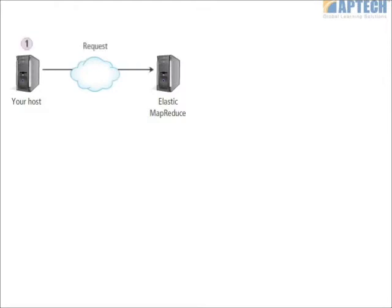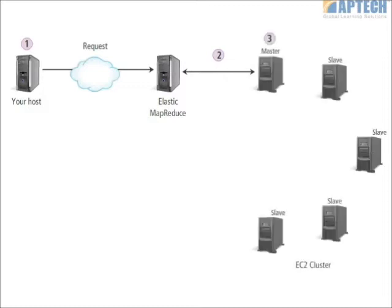Then a request is sent to Elastic MapReduce to begin a job flow. A job flow is a collection of processing steps run by Elastic MapReduce on a specified data set using a set of EC2 instances.